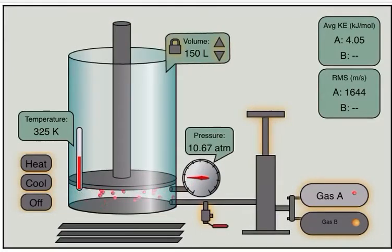You can compare it to the starting point when the volume was a thousand liters, the pressure was 1.6 atm. And now the volume is 150 liters, so it decreased. The pressure became 10.67 atm, so it increased.